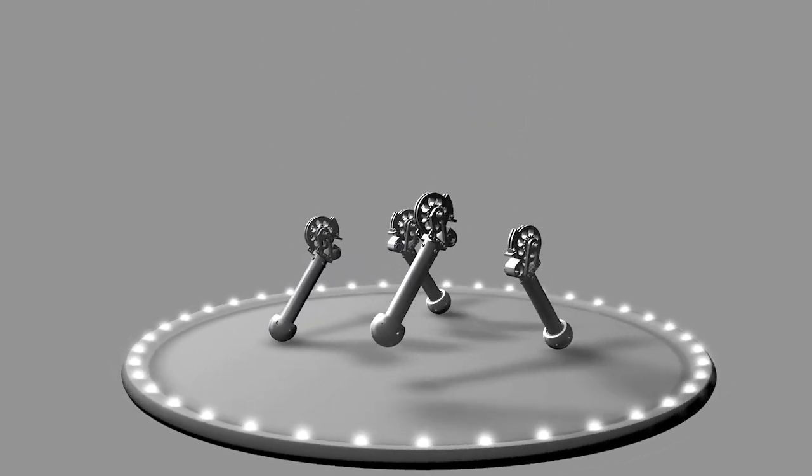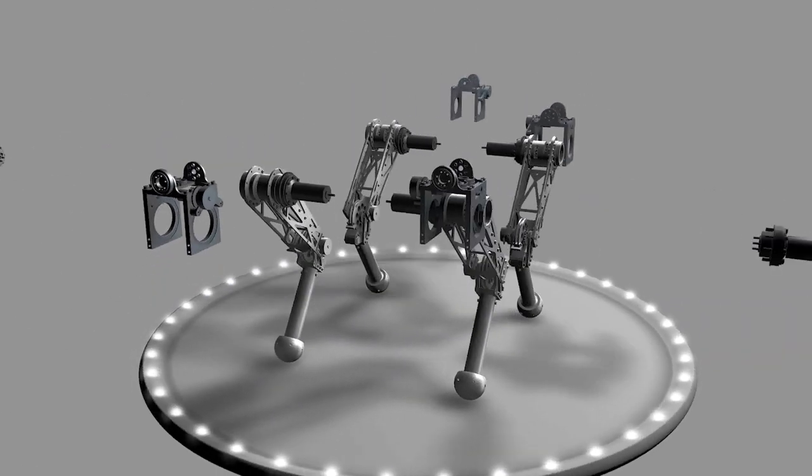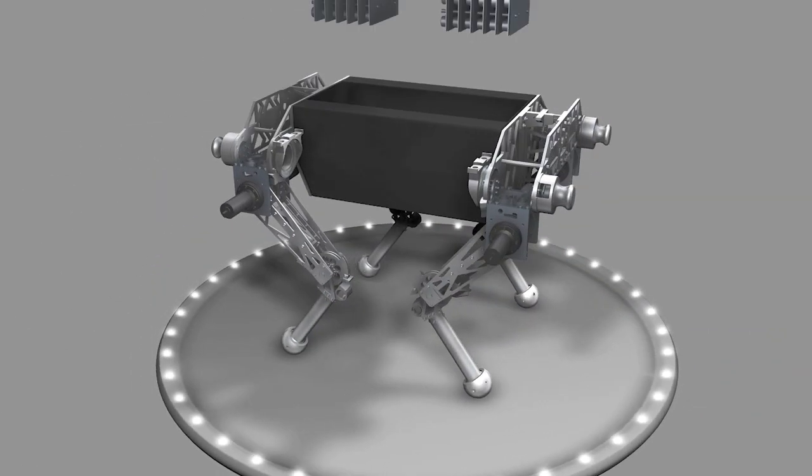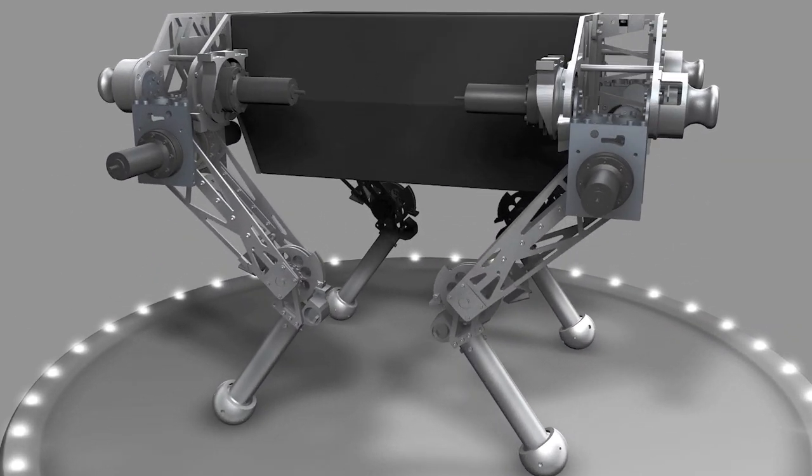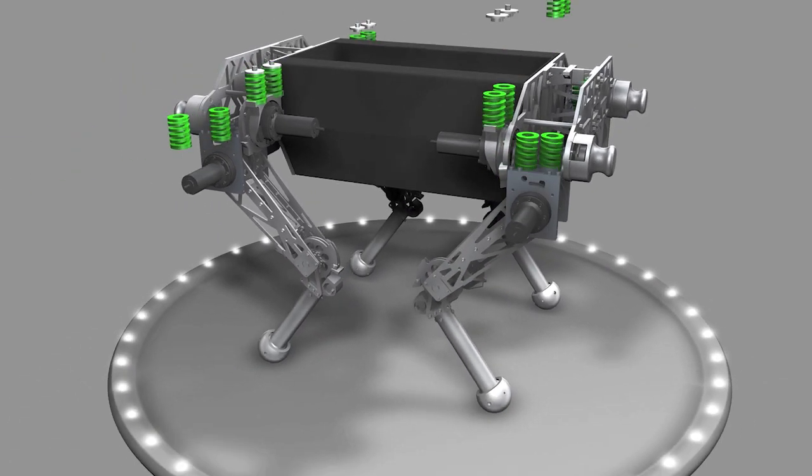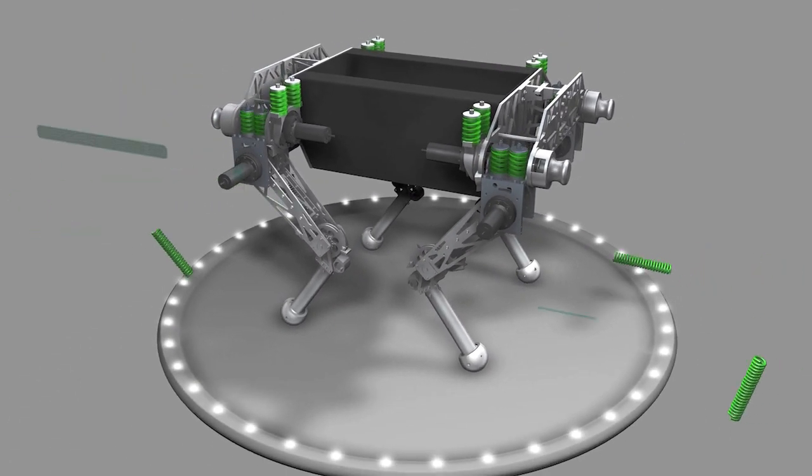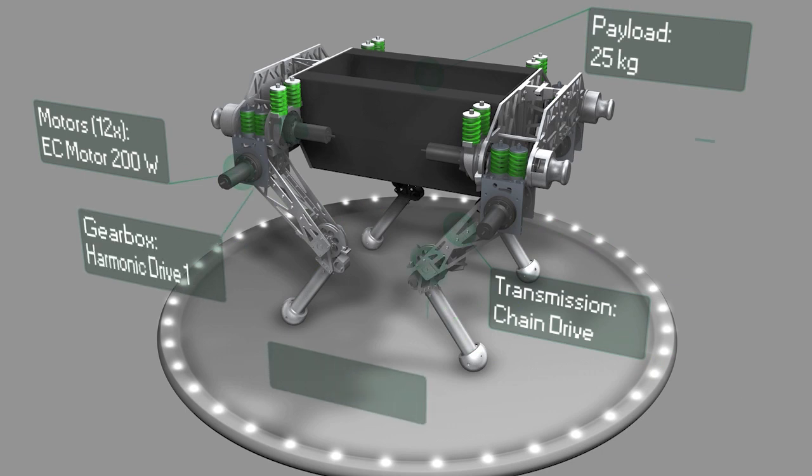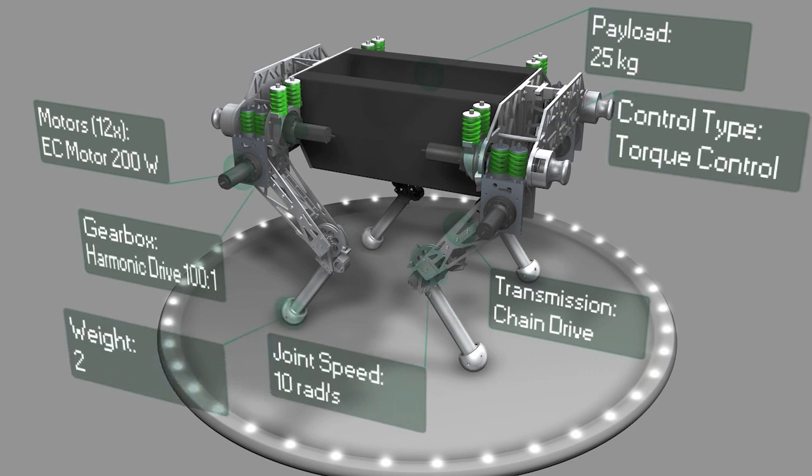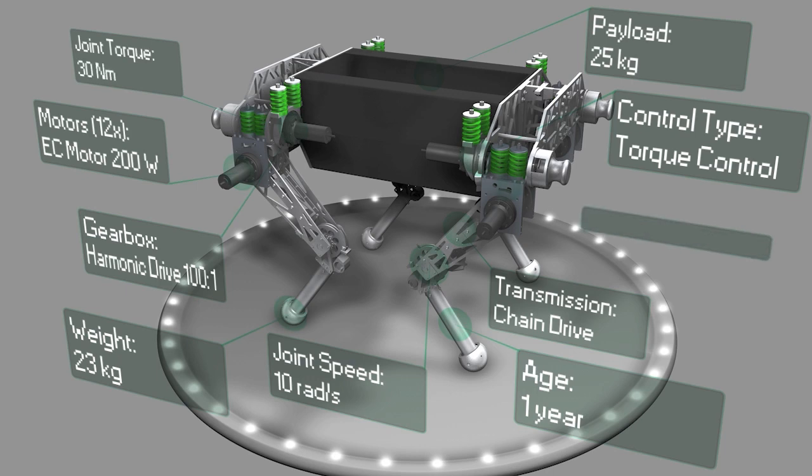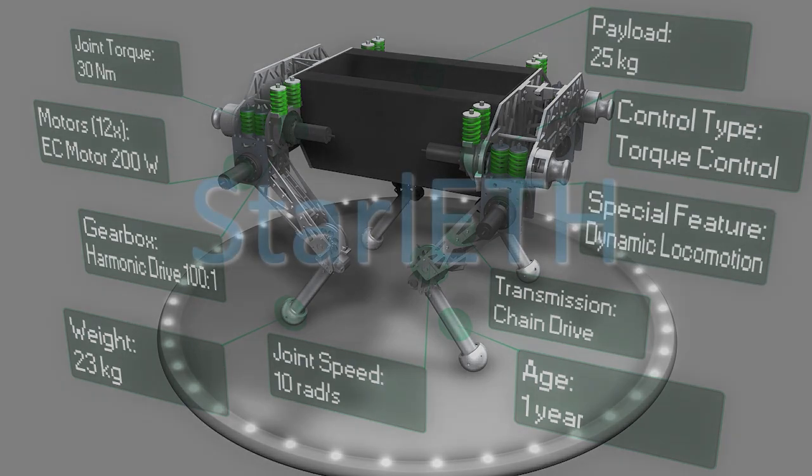Based on these principles, we built the new quadruped robot with steel springs in all 12 joints. All the actuators are tightly integrated at the hip joint to make the moved segments as lightweight as possible. The low inertia at the end effector allows fast leg motions and reduces impact losses. This new robot is called Starlet.